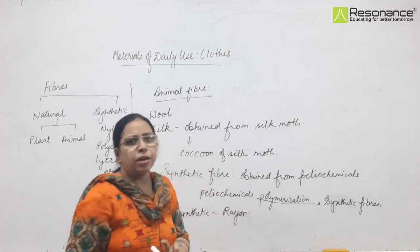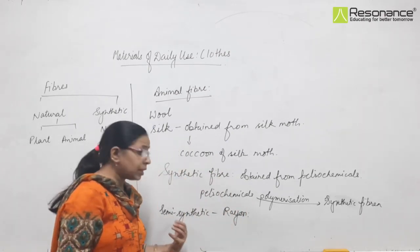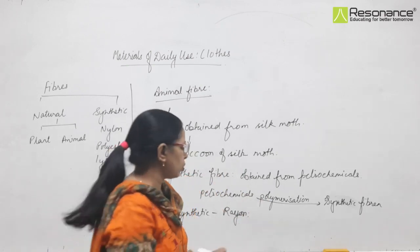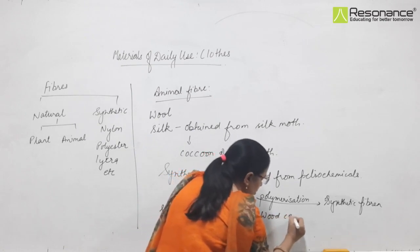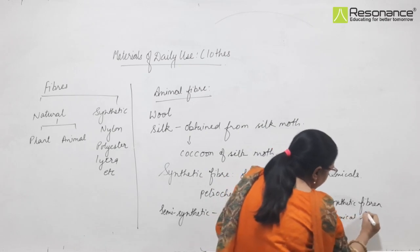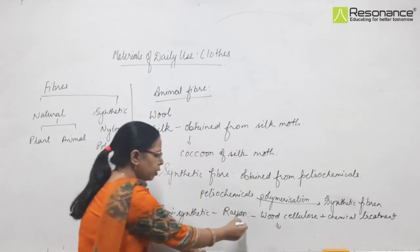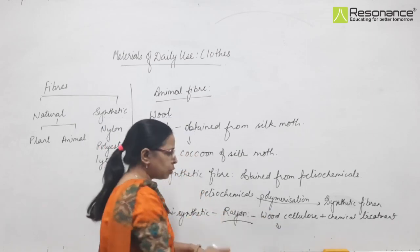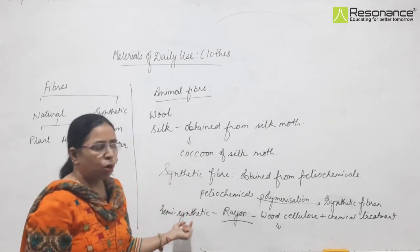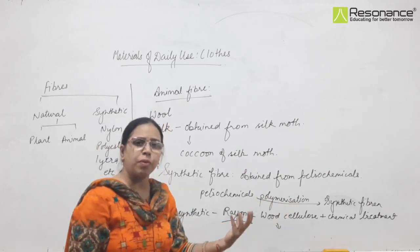Rayon is semi-synthetic in nature. It is called semi-synthetic because half is synthetic and half is natural. The raw material for rayon is natural in nature - it is wood cellulose. This is modified through chemical treatment, and the chemical treatment modifies its real nature. That is how we obtain rayon. So rayon is the only semi-synthetic fiber obtained from wood cellulose. It is semi-synthetic because the raw material comes from nature, but we mix that raw material with chemicals and slightly modify its basic nature to get the fiber we want.